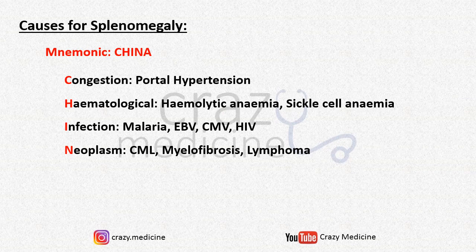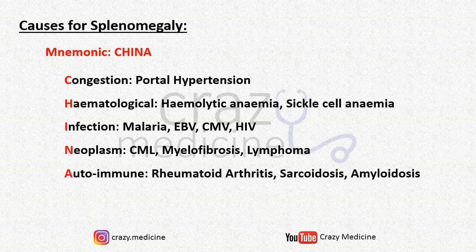myelofibrosis and lymphoma. A stands for autoimmune, which includes rheumatoid arthritis, sarcoidosis, and amyloidosis.